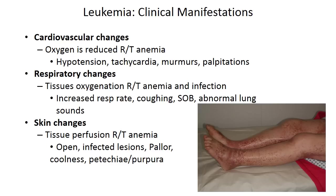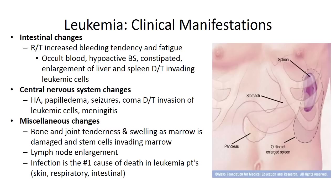Skin changes can be due to anemia or decreased red blood cell counts and can include petechiae, bruising from low platelet levels, infected or open lesions, and pallor and coolness of the extremities.